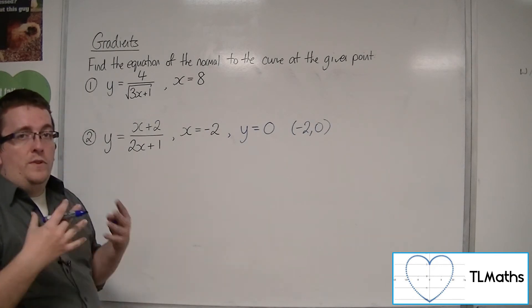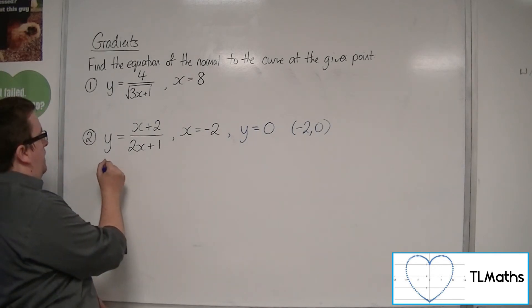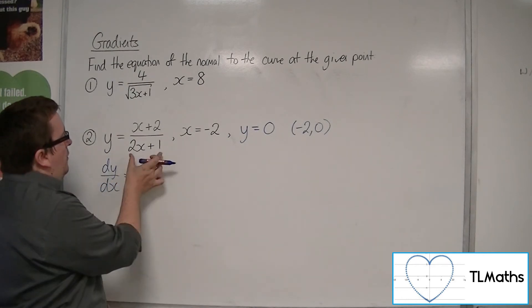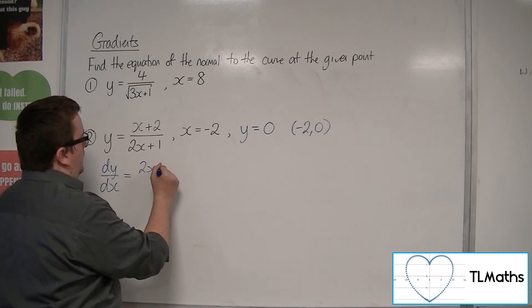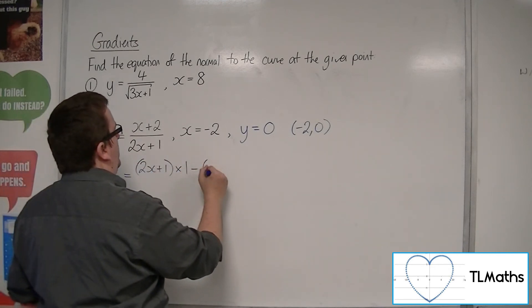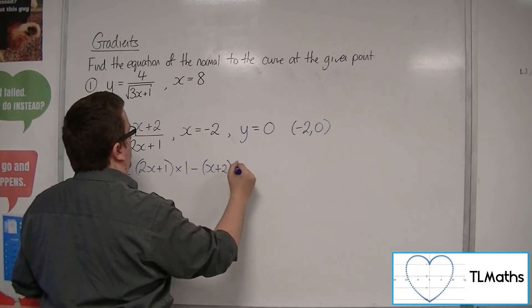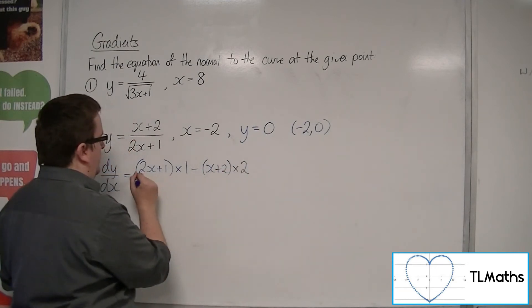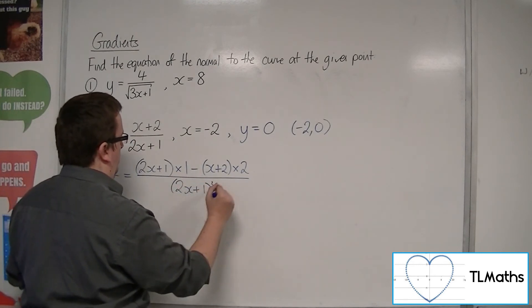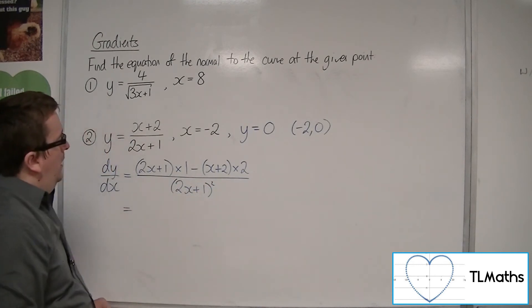So now I want to differentiate this. So I'm going to use the quotient rule. So we've got the bottom times by the derivative of the top, take away the top, times by the derivative of the bottom, all over the bottom squared.